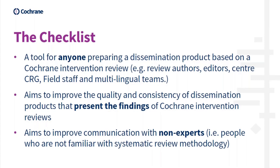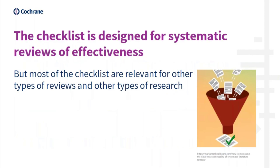As I said earlier, the main aim is to improve communication with non-experts — so clinicians, patients, the public, policymakers, journalists, anybody who is not an expert in systematic review methodology. The checklist is specifically designed for systematic reviews of effectiveness, even though we do have other types of reviews in the Cochrane Library. We would assume, and we've tried in practice and found, that most of the checklist is relevant for other types of reviews and also for other types of research. But the focus is very much on reviews of effectiveness.